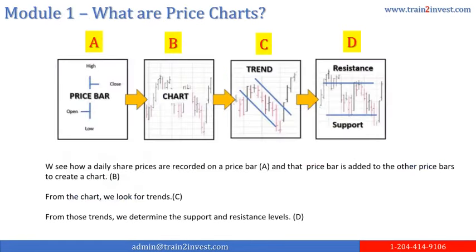Module 1: What are price charts? In this module, we see how daily share prices are recorded on a price bar, as seen in letter A on the chart. As seen in letter B on the chart, that price bar is added to the other price bars to create a chart. From the chart, we look for trends as seen at letter C. From those trends, we determine the support and resistance levels as per letter D on the chart.